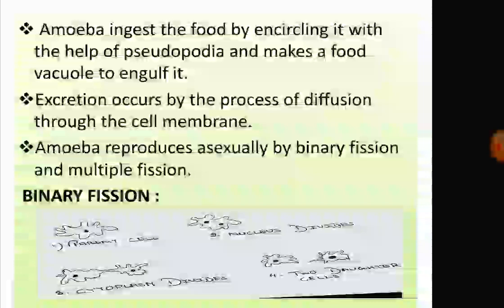Excretion also takes place by the process of diffusion through the cell membrane or plasma membrane. Waste products include carbon dioxide and ammonia. Amoeba reproduces asexually by binary fission and multiple fission. Asexual reproduction does not involve the fusion of gametes.